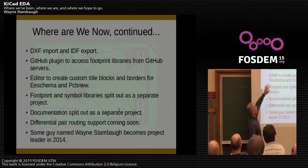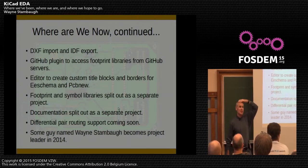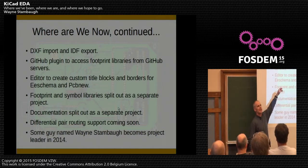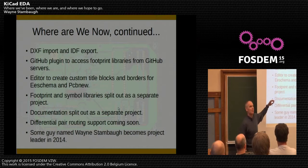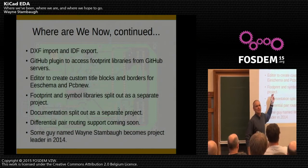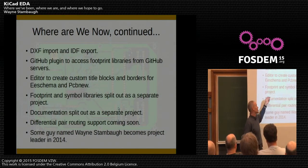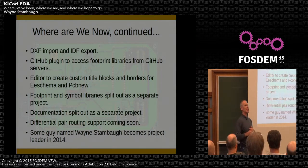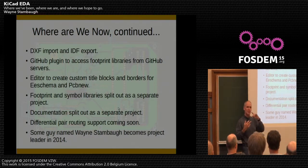We got Eagle PCB footprint library and board import, so we can import directly from Eagle projects. We also do GEDA library import, though not boards yet. We got DXF import and IDF export. The GitHub plugin is rather clever — all our footprint libraries are now on GitHub. You use the GitHub plugin and whenever they're updated you automatically get them. It's got copy-on-write, so if you want to modify them it keeps a local copy and you can diff and send changes to the library maintainers. You can also set up your own GitHub libraries. A total KiCad install is now running around 750 megabytes counting all the libraries, 3D models, symbol libraries, binaries, and documentation.